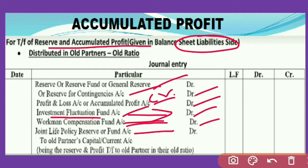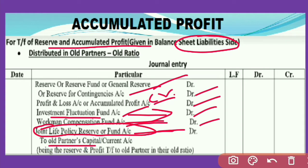Joint life policy reserve or fund — if such reserve exists in the balance sheet, this topic is basically not asked, but if it exists it is also divided among all partners in the old profit sharing ratio. Credit will be given to old partners' capital or current account in their old profit sharing ratio. This will be the entry for distribution of reserve and accumulated profit given on the liability side of the balance sheet at the time of admission of a new partner.